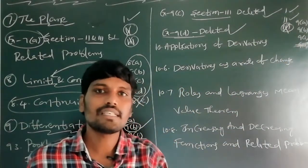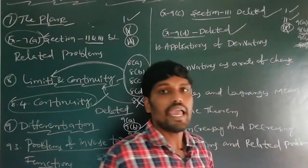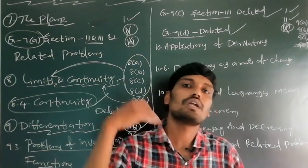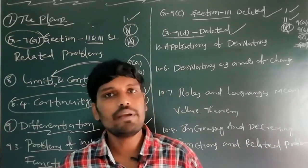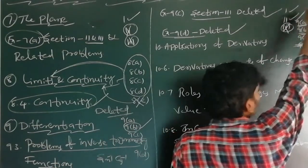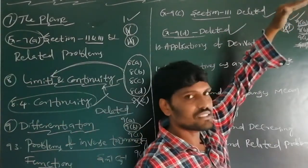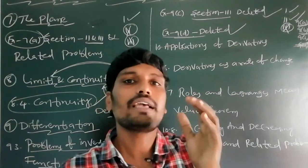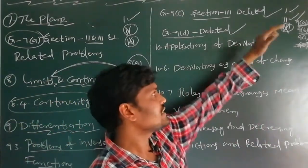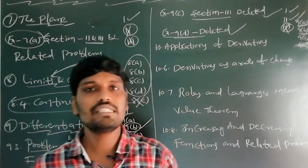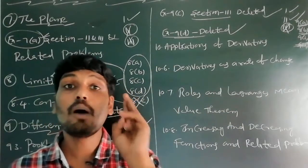To summarize differentiation: Exercise 9a is fully coming to the IP examination. Exercise 9b is coming but inverse trigonometry function model problems are deleted. Exercise 9c is coming but the third section is deleted. Exercise 9d is totally deleted — that is the double derivative portion of differentiation.